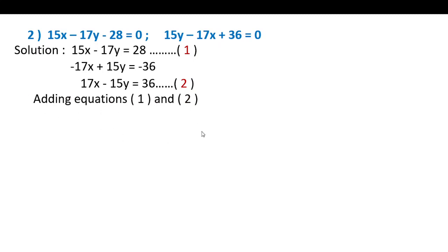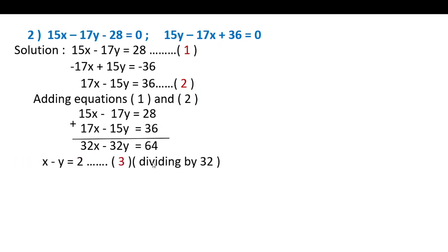Adding equations 1 and 2: 32x minus 32y equals 64. Dividing by 32 gives x minus y equals 2, which is equation 3.